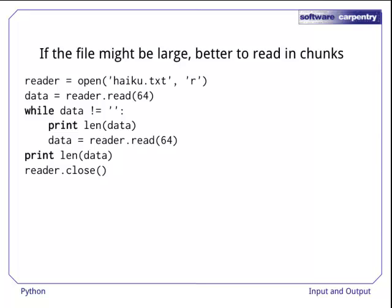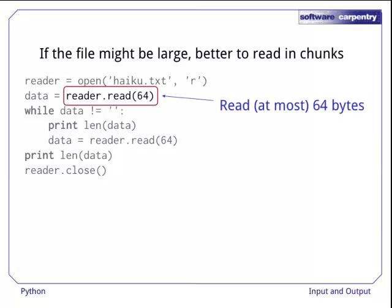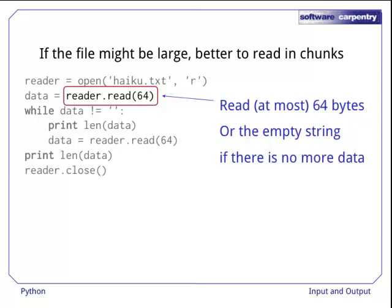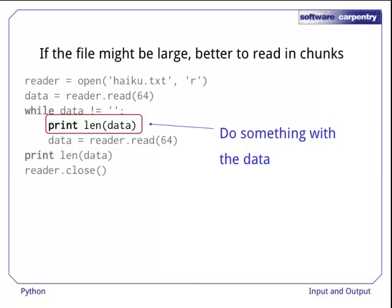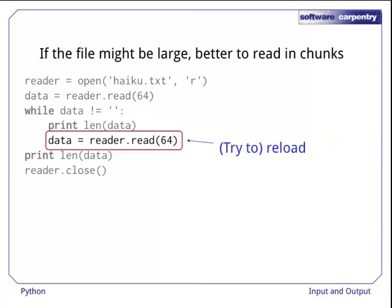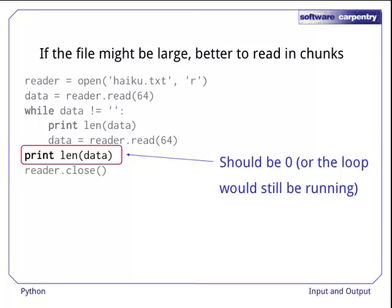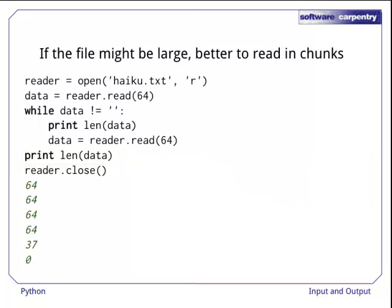Here's a program that does that. After opening the file as before, we pass the value 64 to the read method to indicate that we only want the next 64 bytes of data. This method will return an empty string if there's nothing left to read. The program then goes into a loop. As long as its last attempt to read from the file returns some data, it prints out how much data it read, then tries to read some more data. As a check, we print the length of data after the loop is over. However, this should be zero, since the program should stay in the loop as long as it's actually getting data from the file. Sure enough, the output is four full blocks of 64 characters, one partial block of 37, and then zero at the end of the file.